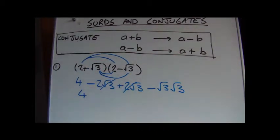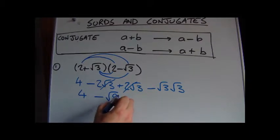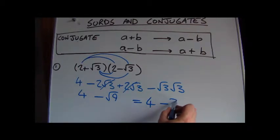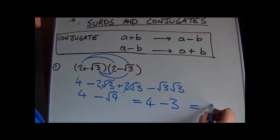This we can combine using the multiplication rule. So this is going to give us minus root 9, which we can simplify to give us 4 minus 3, which is equal to 1.